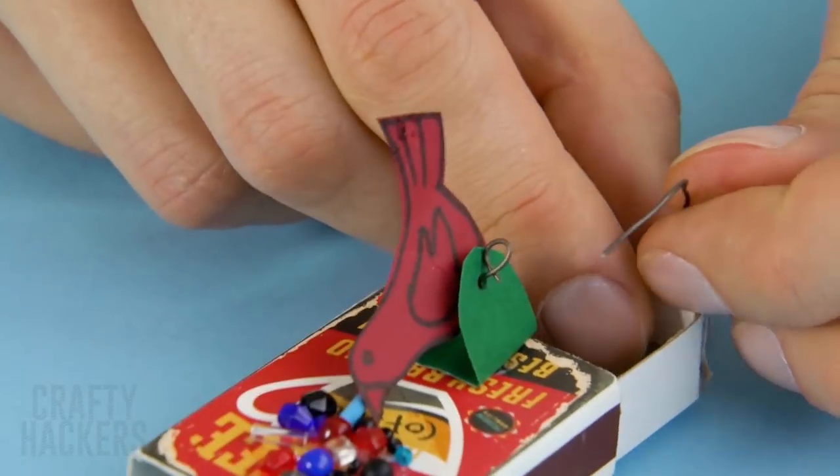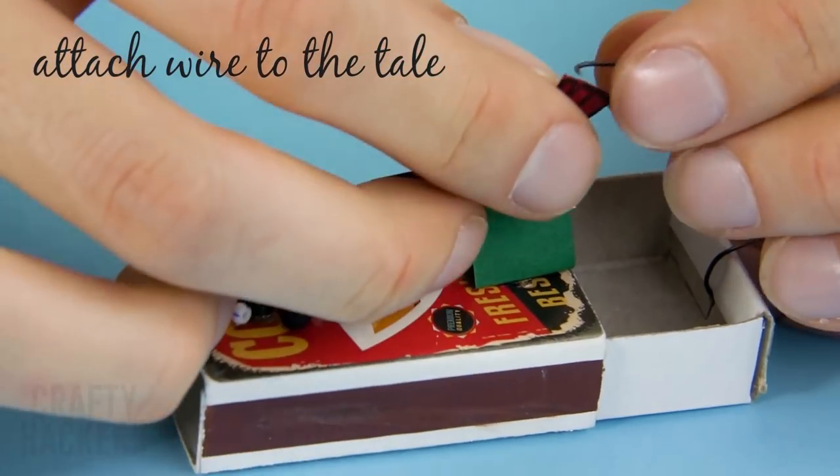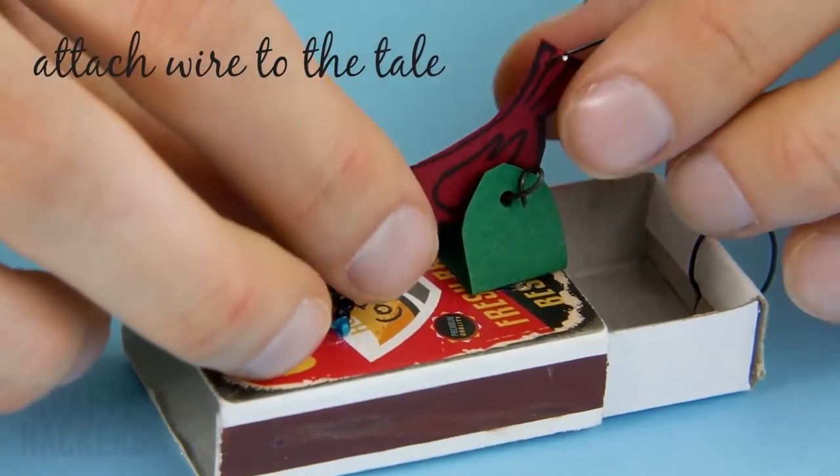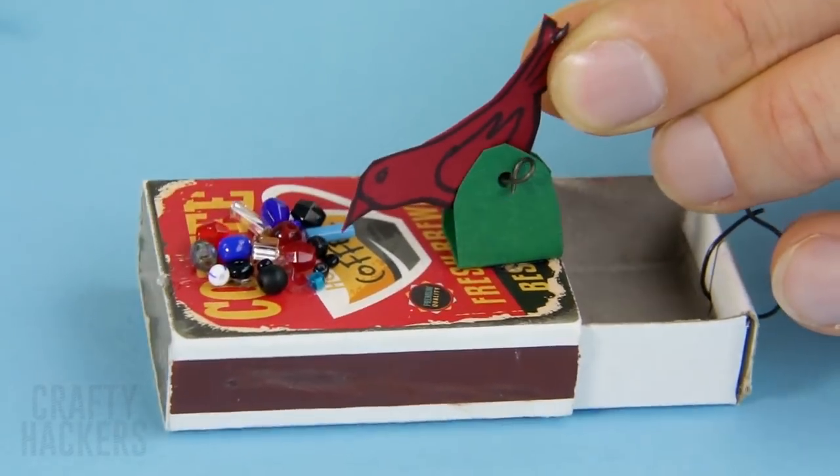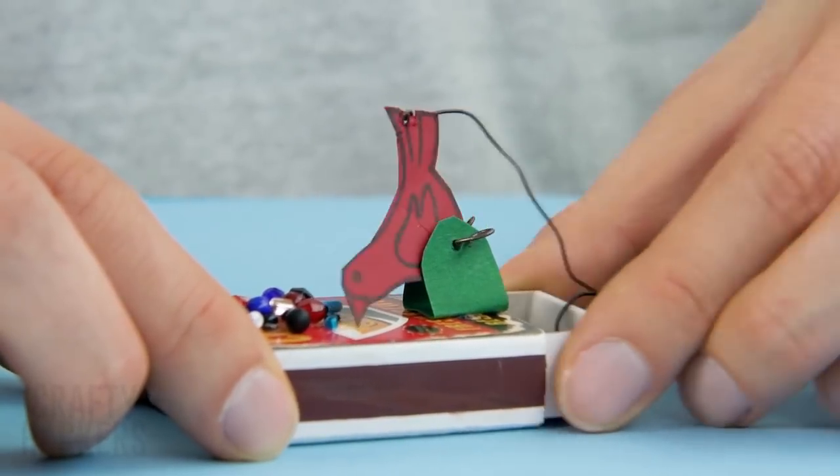Then secure another wire to the end of the inner part of the box. Carefully poke a small hole in the tail of the bird. Attach the wire to the tail. Bend the end in with pliers. Open and close the box to see your bird move and eat his fancy bird seed. Now you are officially a mechanical engineer.